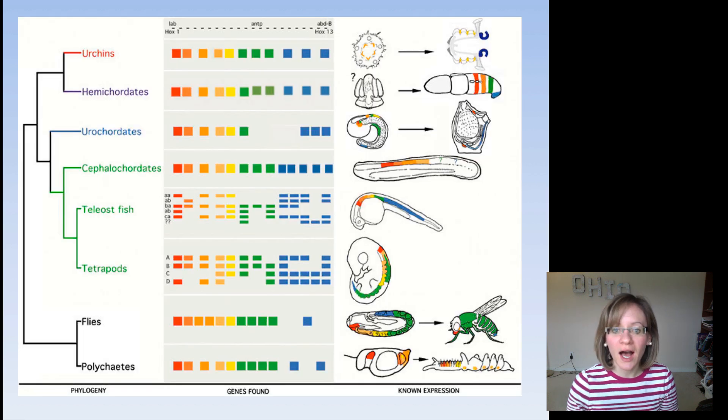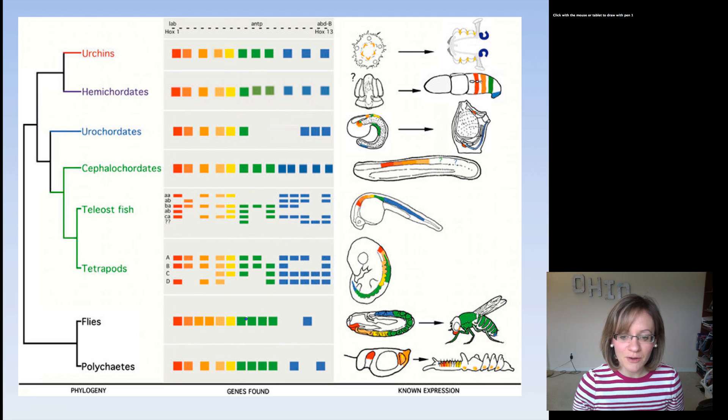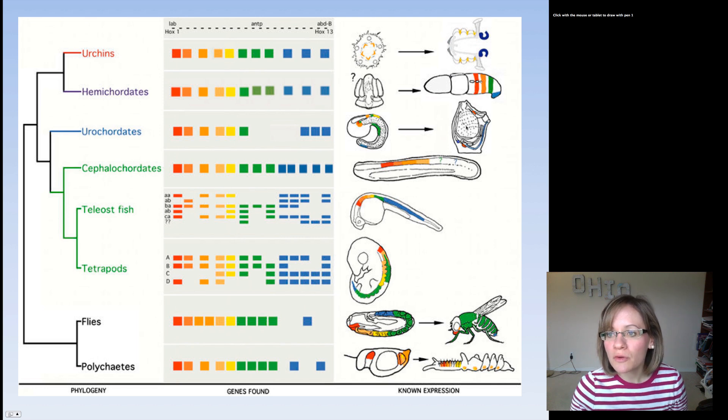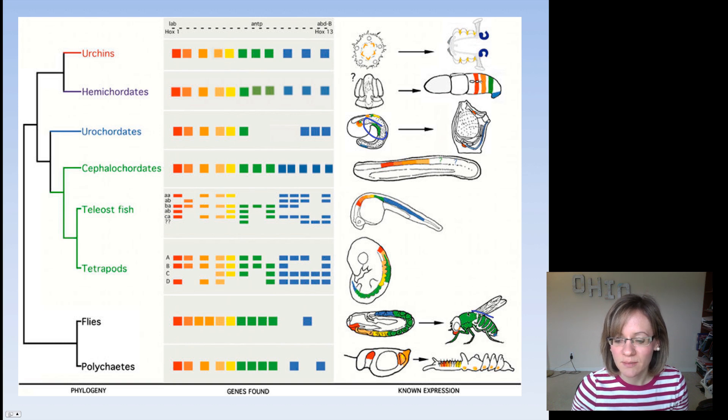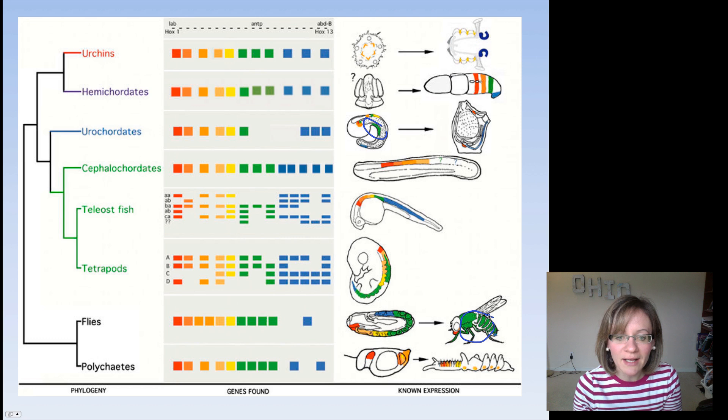So again, these are called homeotic or Hox genes. So here's the figure I was telling you about that shows how in all of these very, very diverse organisms, all of these homeoboxes in red are going to code for something near that head of that organism. And the green is going to code for that abdomen or that body of that organism. So when you think about evolution, this is just amazing. I mean, this is molecular evidence for evolution.